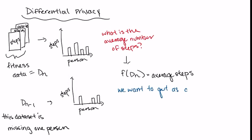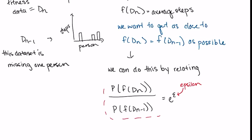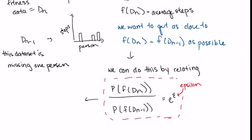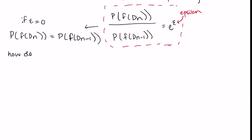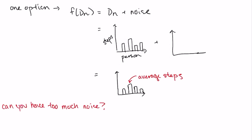So we want to create a function f, such that the output of this function applied to the entire dataset and the output applied to the whole dataset minus that one person are as similar as possible. Specifically, we want the probability distributions of these two outputs to be related by a factor called epsilon. The number you choose for epsilon reflects how private you'd like the data to be. For example, if epsilon equals zero, then the distributions of the outputs are exactly the same and you've achieved peak privacy. There are many ways to create that function, but a common first approach is to add random noise to your data. By doing this, you can keep the distributions of the two datasets roughly the same and ensure privacy.